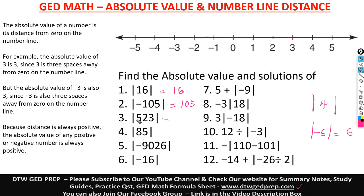The absolute value of 5.23 is 5.23. The absolute value of 85 is a positive 85. The absolute value of negative 9026 is 9026, a positive value. The absolute value of negative 16 is a positive 16.